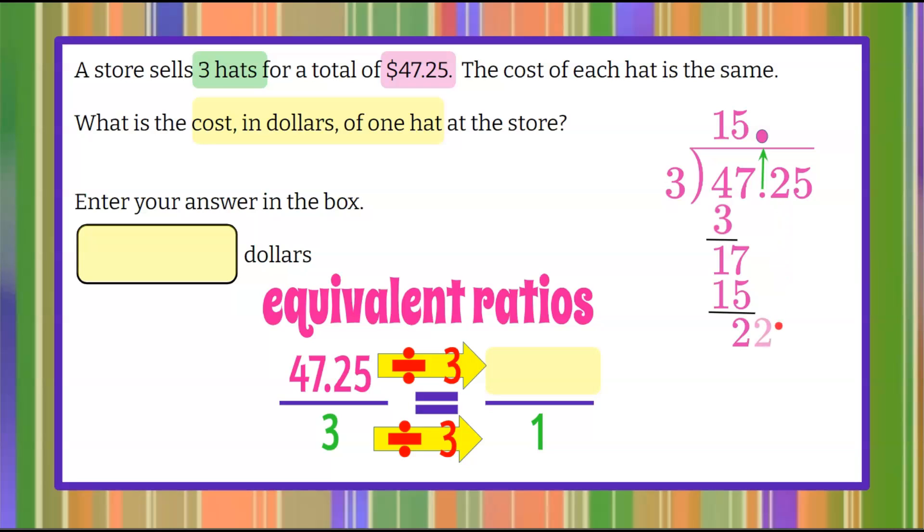Bring down our next value, which is two. Three goes into 22 seven times. Seven times three is 21. 22 subtract 21 is one.